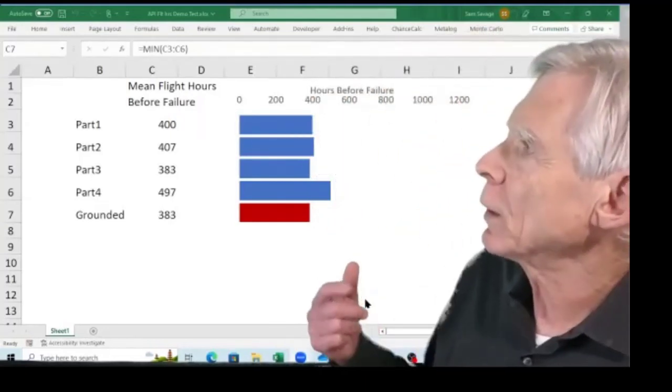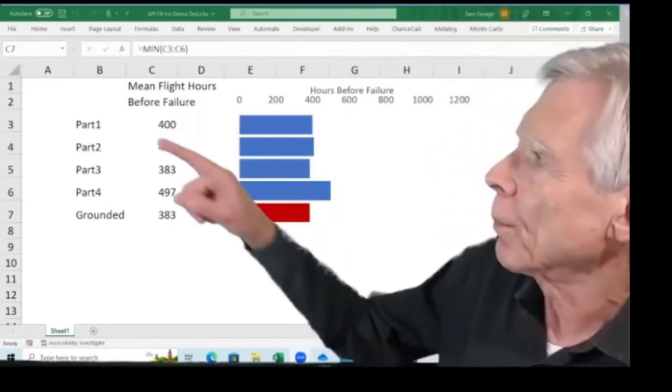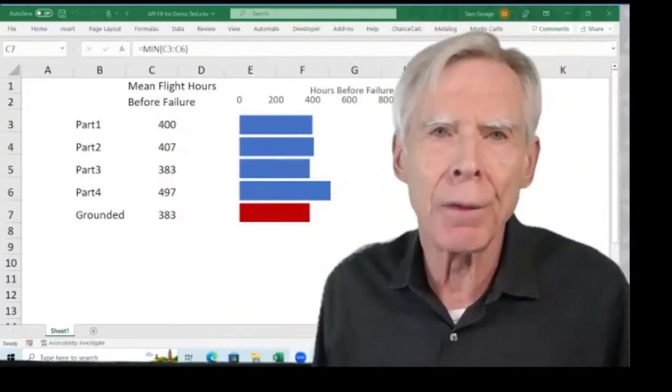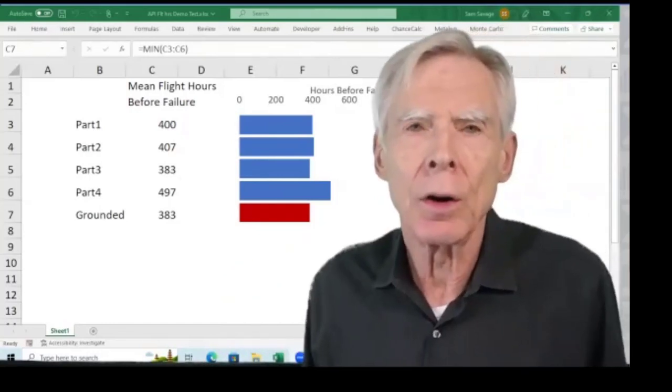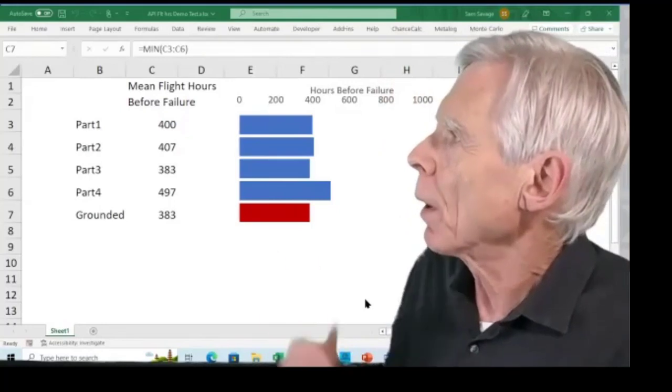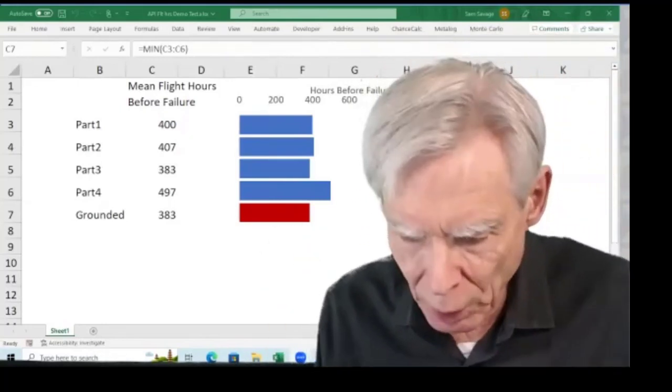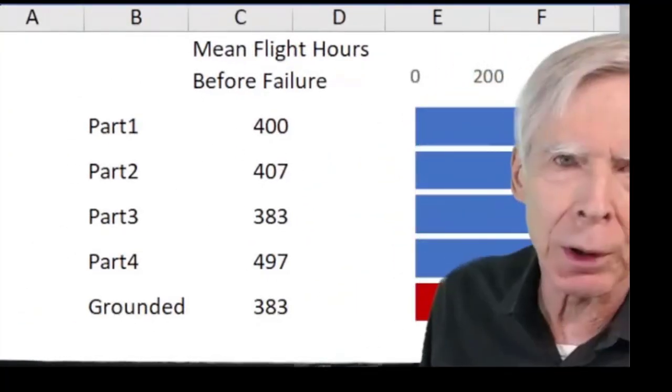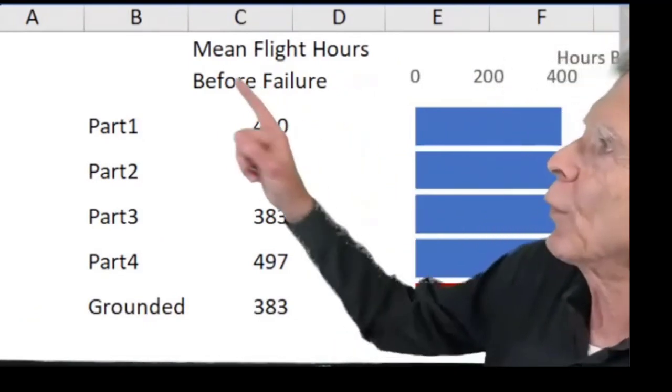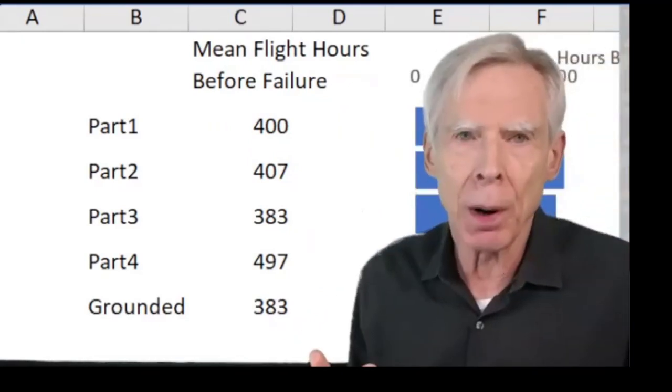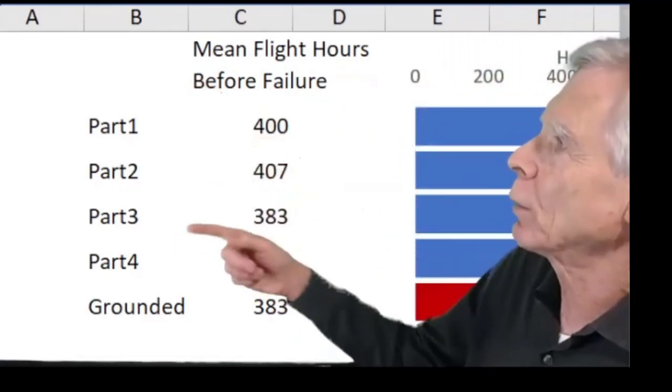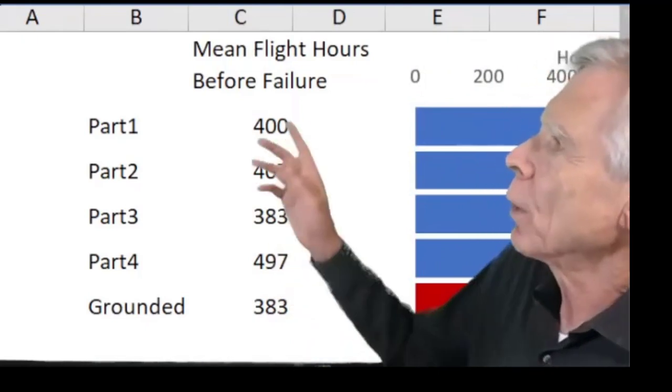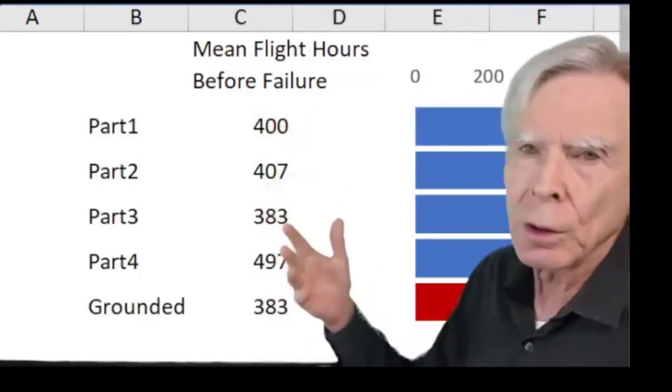We're going to start with a particularly egregious example of the flaw of averages. This represents the time to failure of four aircraft parts. These problems appear everywhere in project scheduling, in demand for products, and so on. But this particular case is really quite egregious. In worrying about aircraft dependability, people often refer to the mean flight hours before failure of a part.